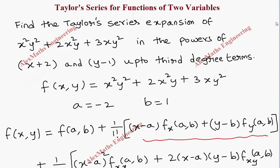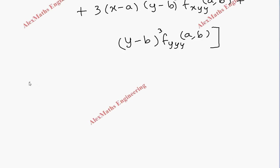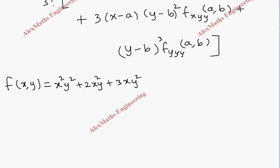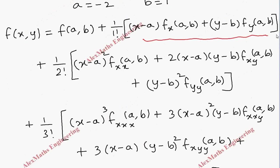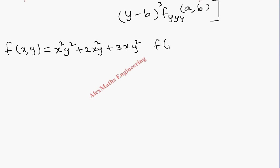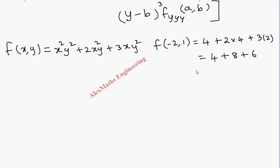Now we find the required derivatives. The function is f(x,y) = x²y² + 2x²y + 3xy². With a = -2 and b = 1, we compute f(-2, 1): (-2)²·(1)² + 2·(-2)²·(1) + 3·(-2)·(1)² = 4 + 8 - 6 = 6.